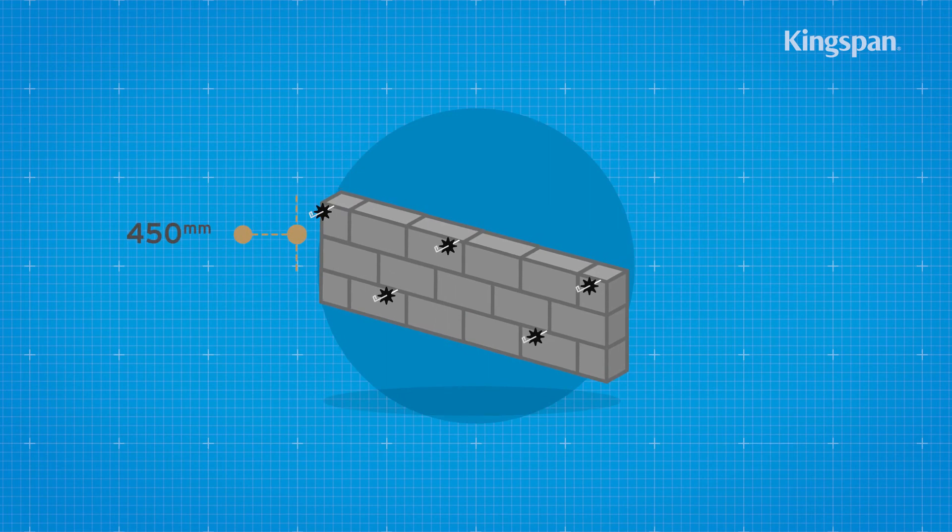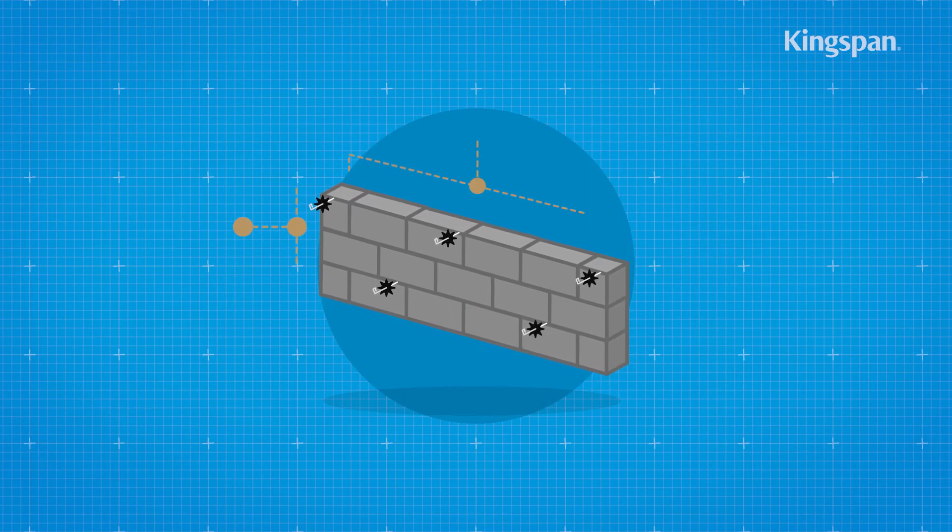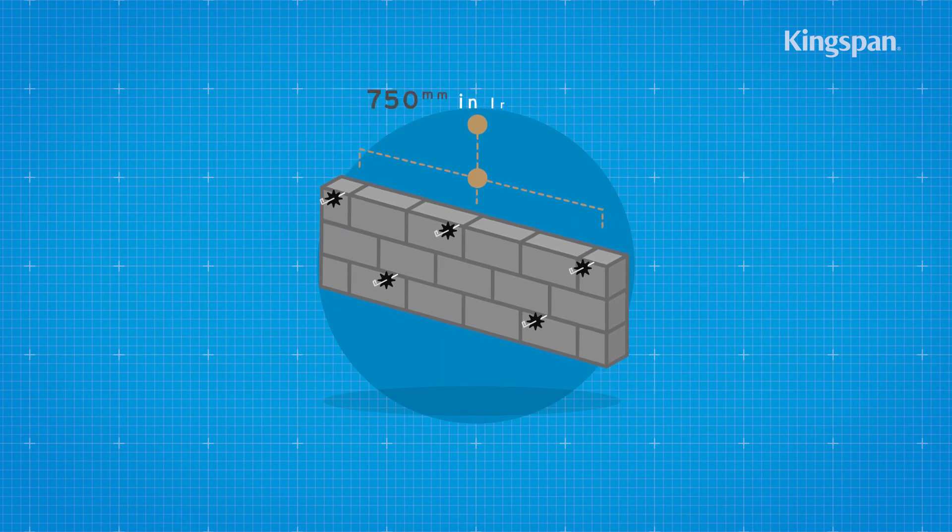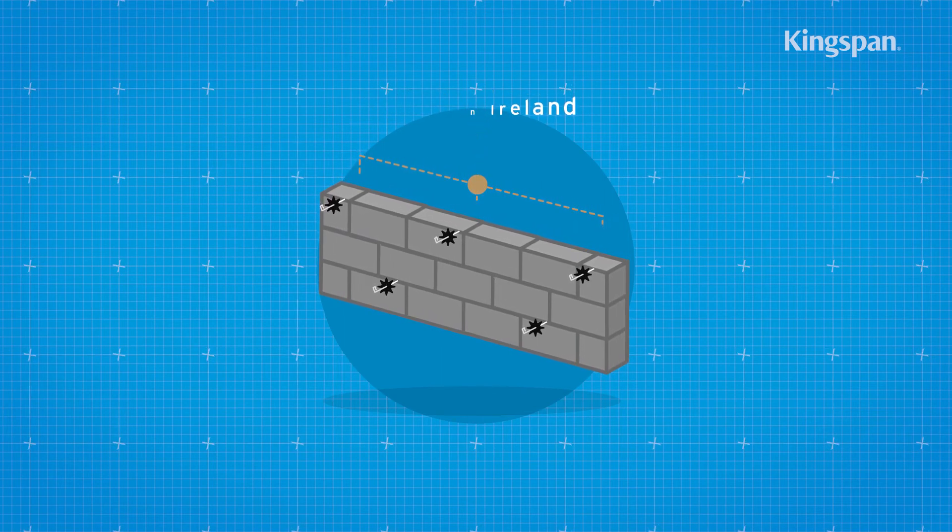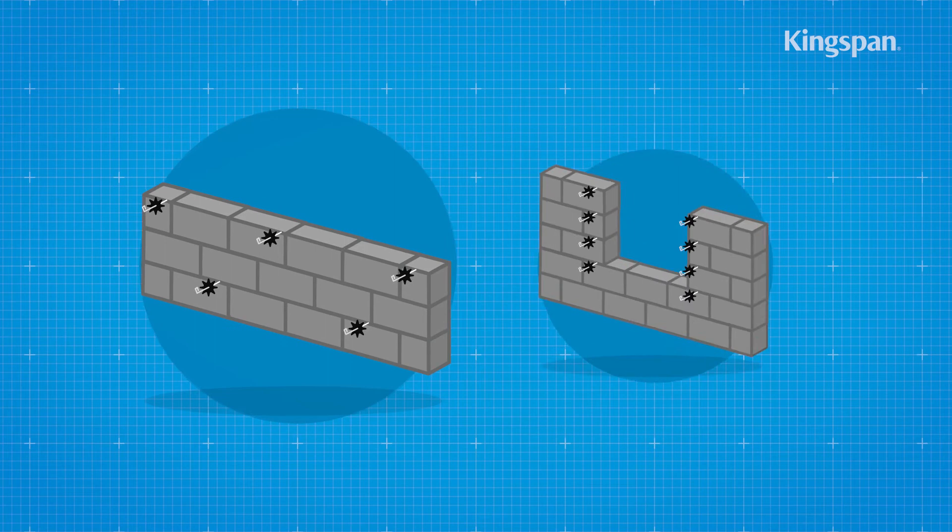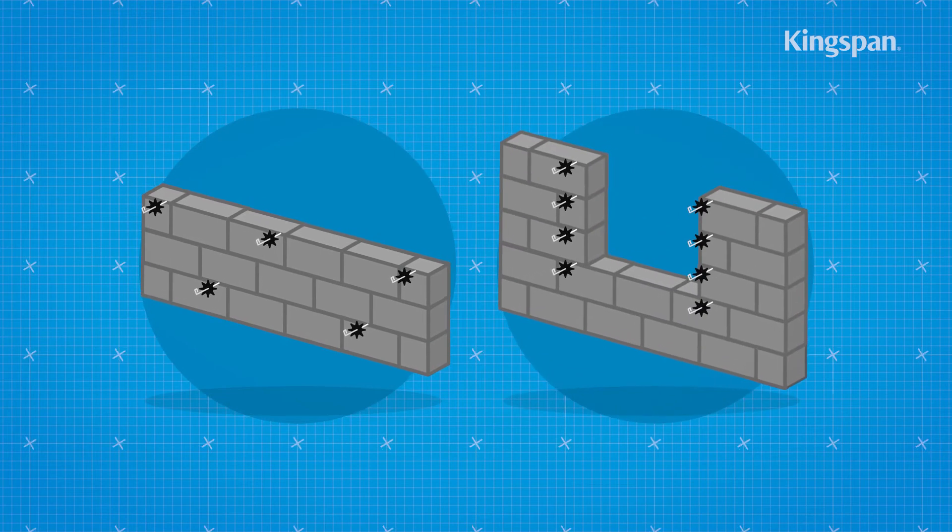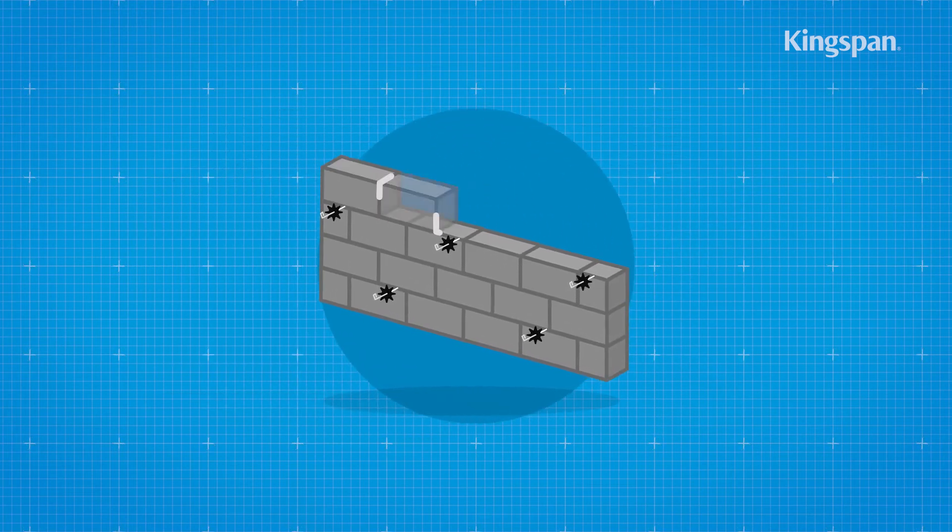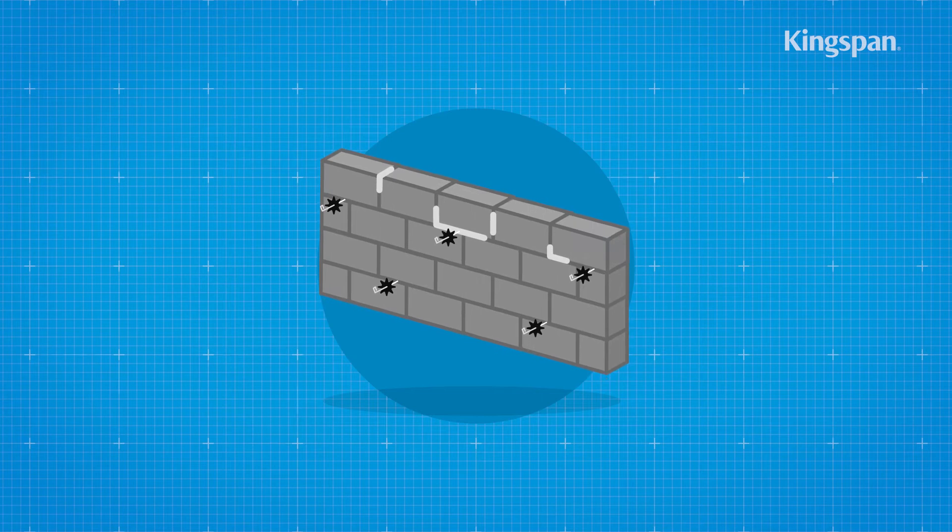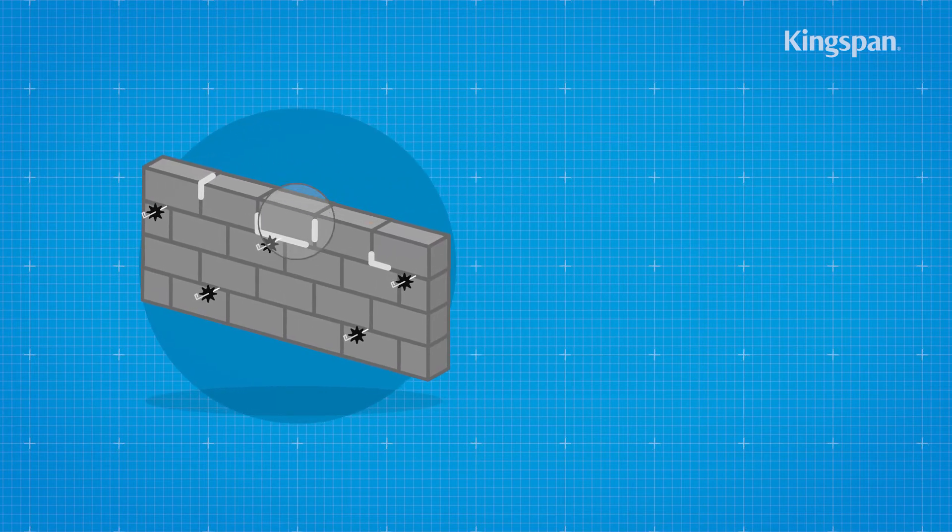Continue constructing the inner leaf up to the next wall tie course. The next course of wall ties is positioned at regular horizontal centers. Extra wall ties should be positioned at jams for all openings. The next course of block work should then be installed to secure the ties.